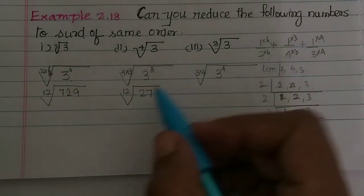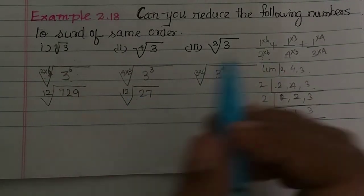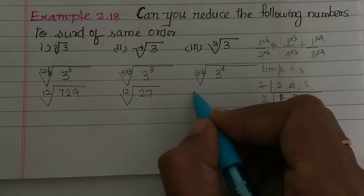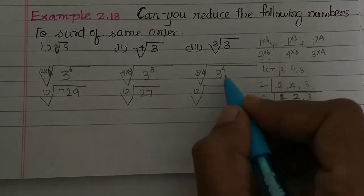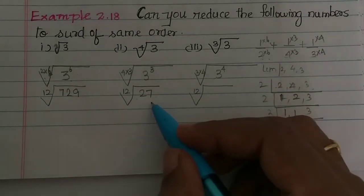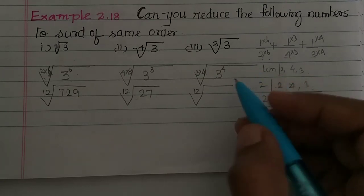3 into 3 into 3, so 27 into 27 is 729. 3 times 4 is 12, so 12th root of 3 power 4 is 27 into 3 which is 81.